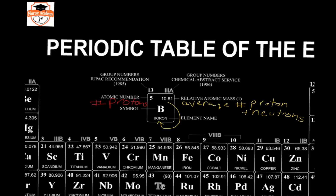When you average the atomic mass of this population — about 20% boron-10 and about 80% boron-11 — you end up with an average atomic mass or relative atomic mass of 10.81. Our periodic table also includes the atomic symbol and the name of the element. The atomic symbol is always one capital letter followed by one lowercase letter.